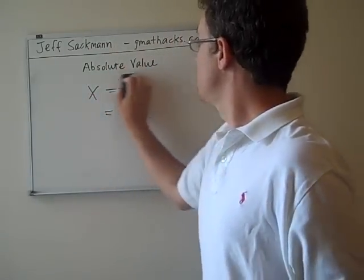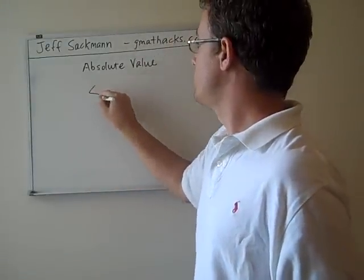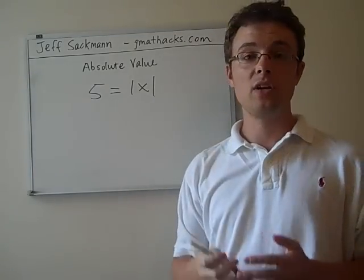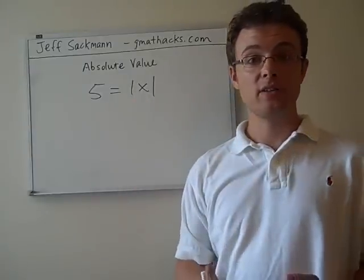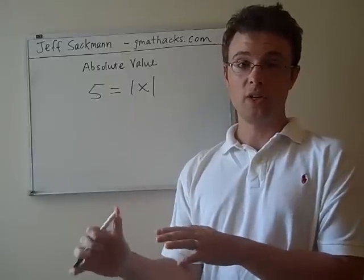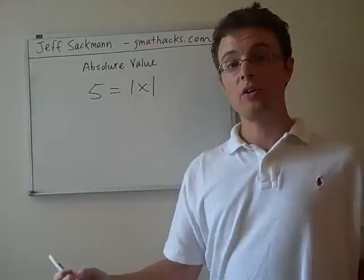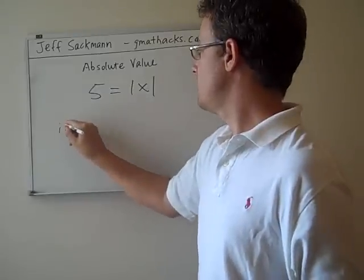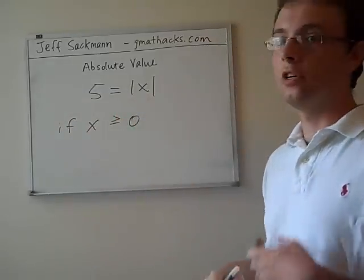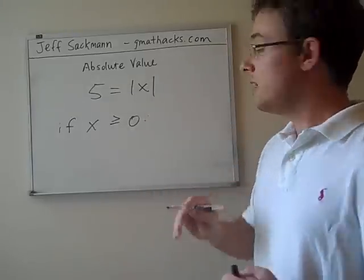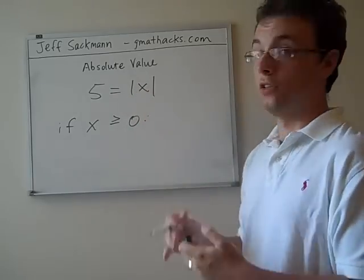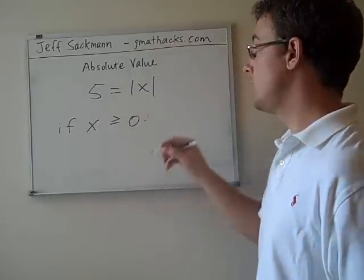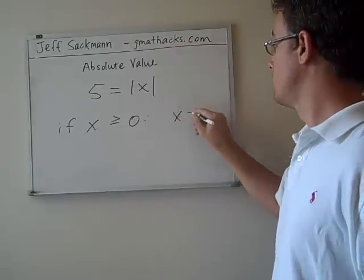Where it gets trickier is when the variable is within the absolute value signs. Let's say 5 equals the absolute value of x. Our way of solving something with absolute value signs depends on knowing what's inside, but we don't currently know anything about x. We need to take a broader view and look at a couple different options. If x is greater than or equal to 0, then x is not negative, so 5 equals x, or x equals 5.